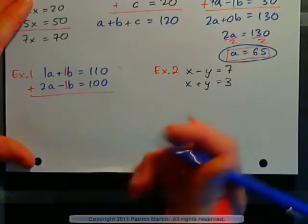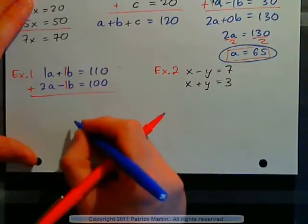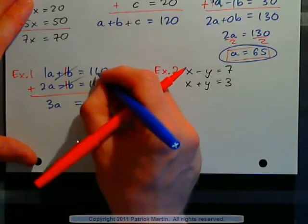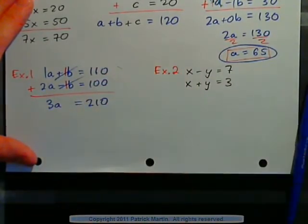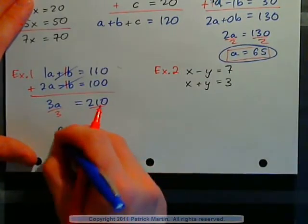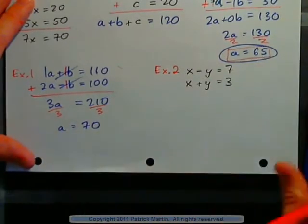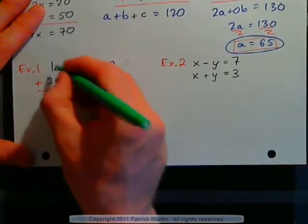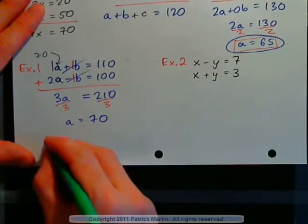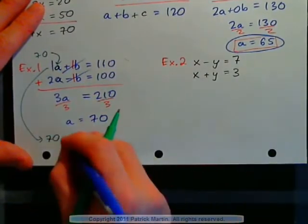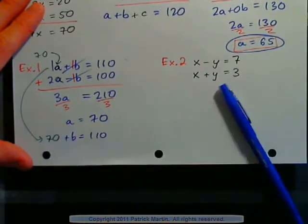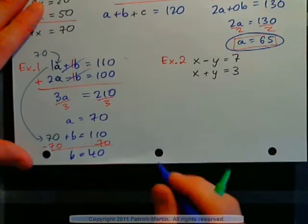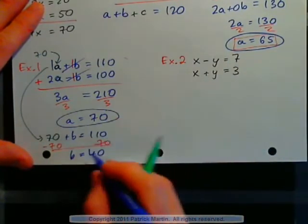If I add the left-hand sides together, I have 1A plus 2A, which is 3A. And 1B minus 1B is 0. So 3A equals 110 plus 100, which is 210. Dividing by 3, A equals 70. I already have the price of the apple. Now I just need to find the banana. I'll plug 70 into the top equation, which now reads 70 plus B equals 110. Subtracting 70 from both sides gives B equals 40. So apple is 70 cents and banana is 40 cents.